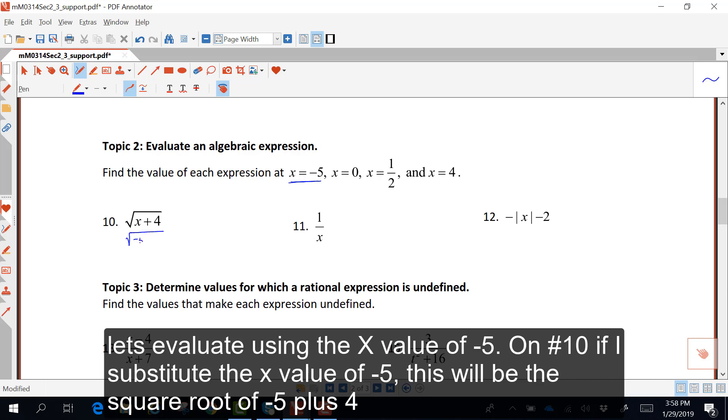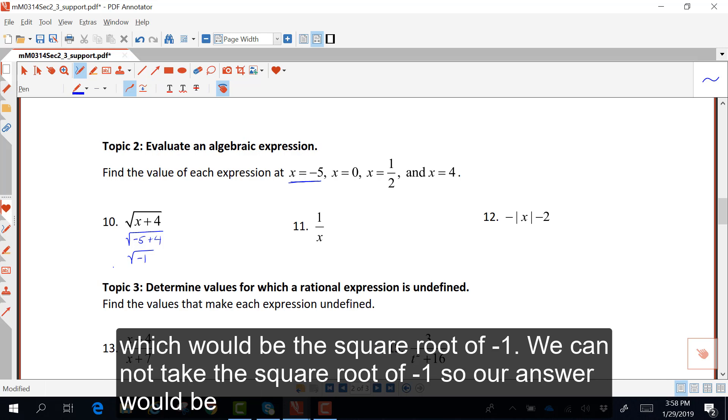if I substitute the x value of negative 5, this will be the square root of negative 5 plus 4, which would be the square root of negative 1.